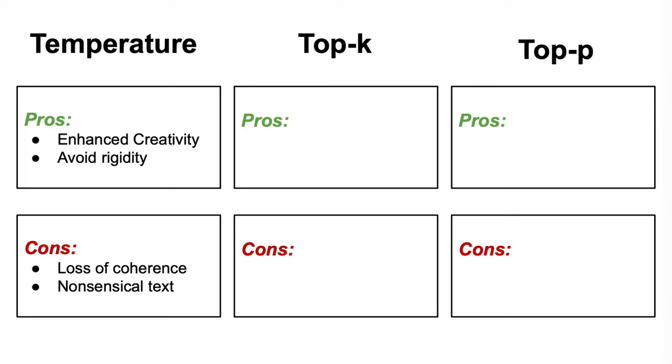For the top-k sampling, on the pros side, we have that it enables control over the diversity of generated text by selecting from the top-k most probable words, and that it limits the choices to a set of high probable words, reducing the likelihood of generating nonsensical text.